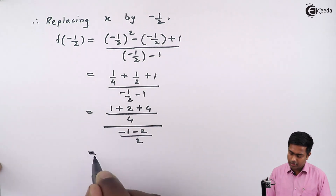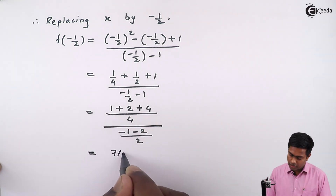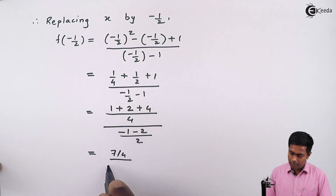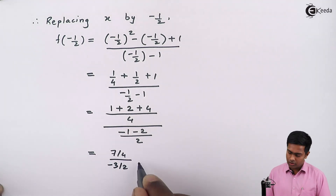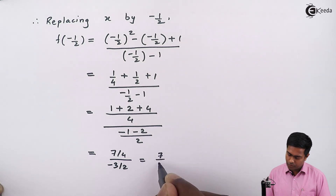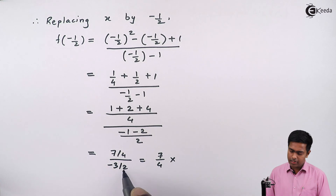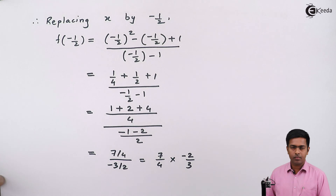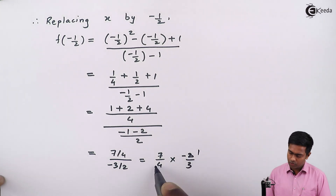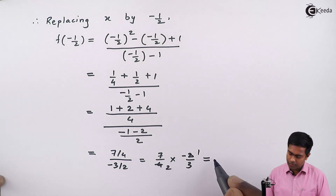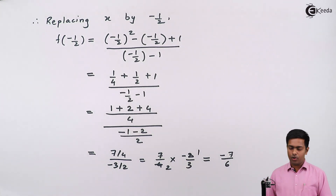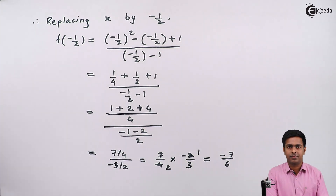So we get 7 by 4 in the numerator and minus 3 upon 2 in the denominator. This division becomes multiplication and minus 3 by 2 in the numerator becomes minus 2 by 3. So 2 twos are 4 and this gives us minus 7 by 6. So the value of f of minus 1 by 2 is minus 7 by 6. Thank you.